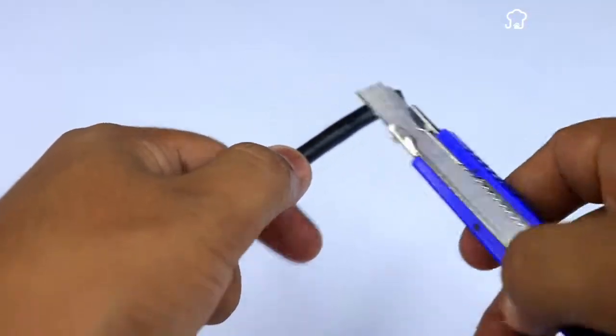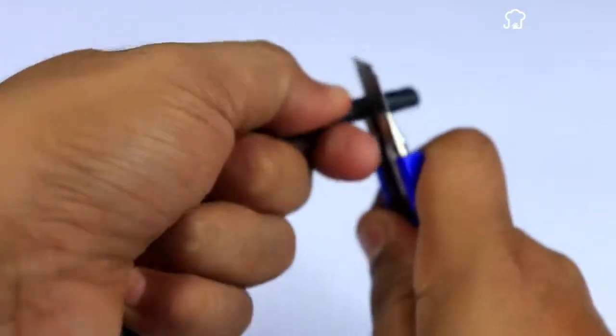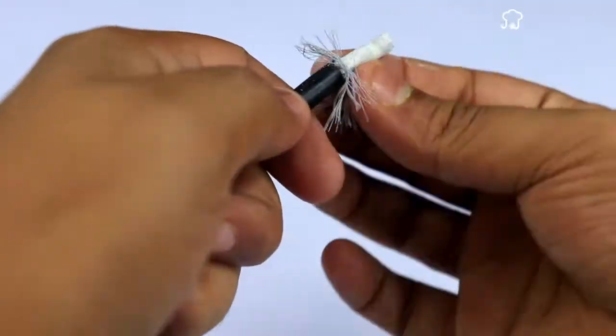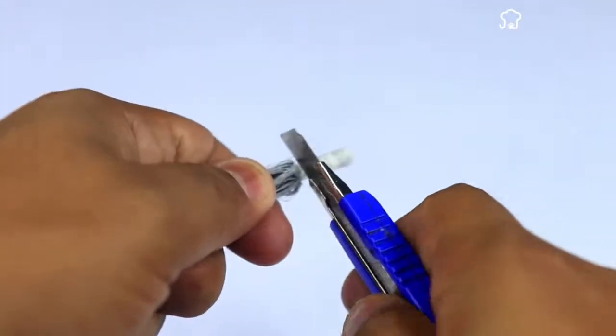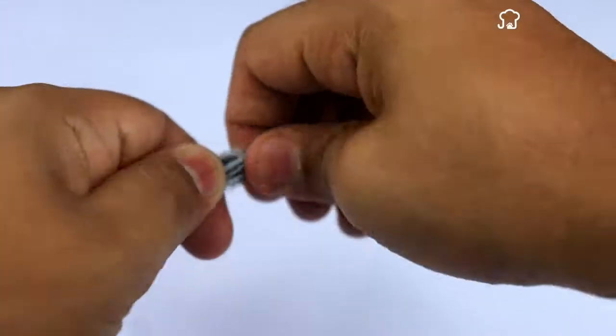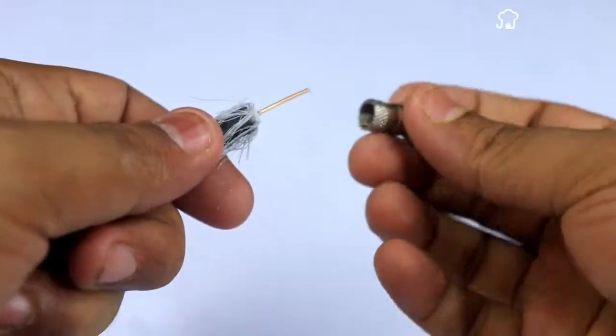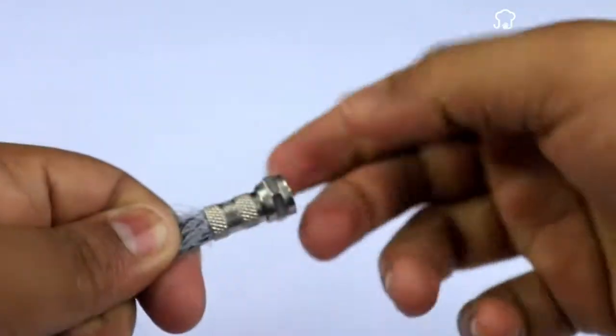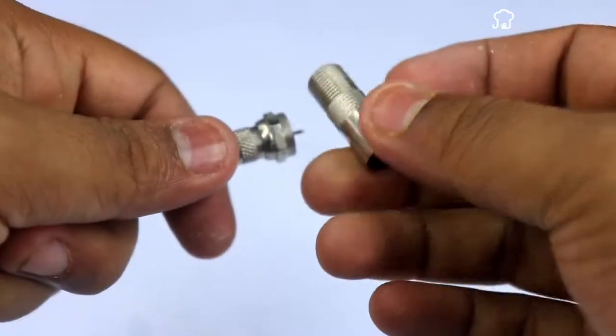Peel the end of the coaxial cable and separate the wires. Then, connect a coaxial cable connector to one output, and then a two-output connector, as shown in the instructions.